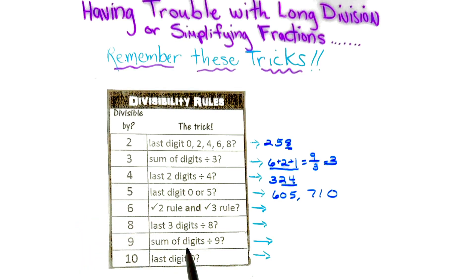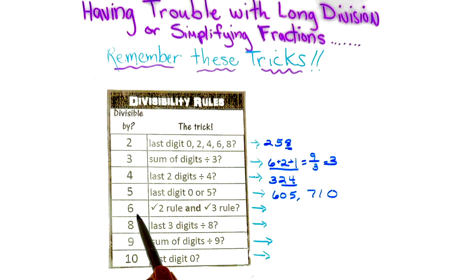If a number follows rule number 2 and rule number 3, we do know that it is divisible by 6.